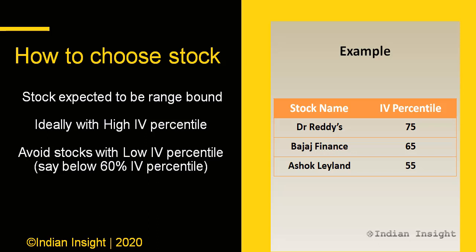For example, if Dr. Reddy's has a 75 IV percentile, Bajaj Finance has 65, and Ashok Leyland has 55, your first preference should be the Dr. Reddy's short strangle and the second preference should be the Bajaj Finance strangle — assuming everything else is also in your favor.